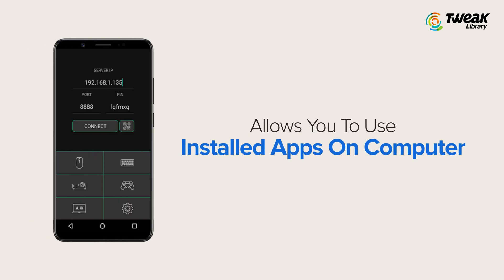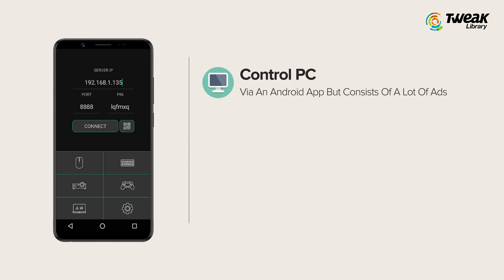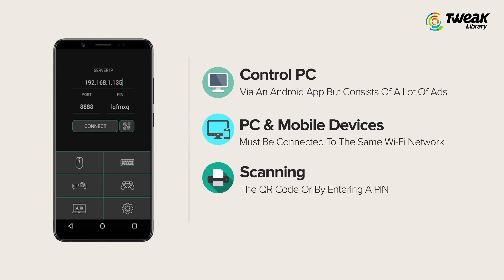On number 2, Kiwi Mode. It's a free-to-use Android app which allows users to use computer-installed apps via an Android smartphone, but does not allow the user to view the computer screen. It has a built-in interface for desktop applications like VLC Media Player, Windows Photo Viewer, Adobe PDF Reader, KM Player, and many others. Control PC via an Android app, but it consists of a lot of ads. PC and mobile devices must be connected to the same Wi-Fi network, with connection established by scanning a QR code or by entering a PIN.